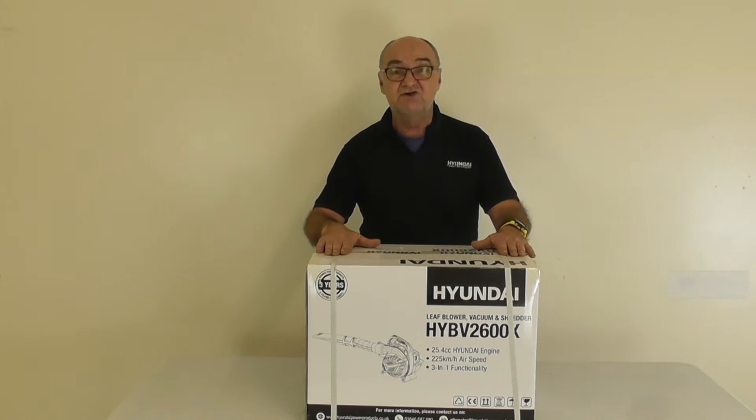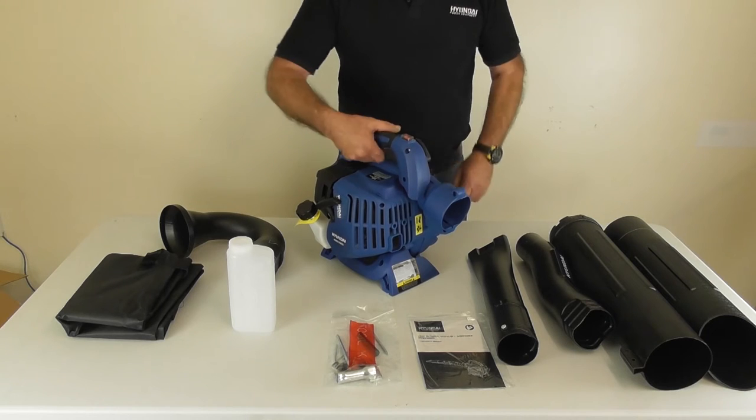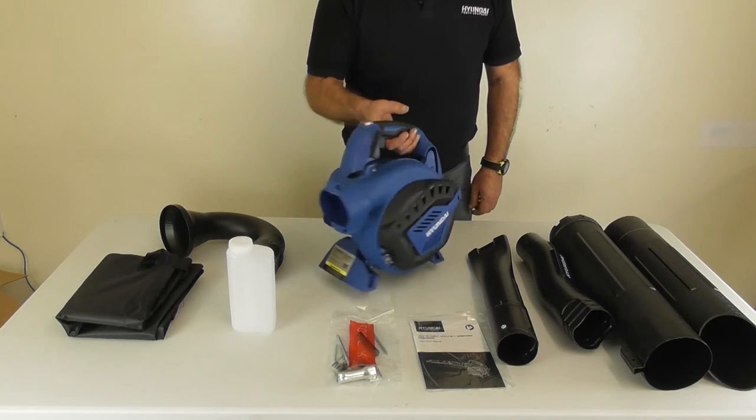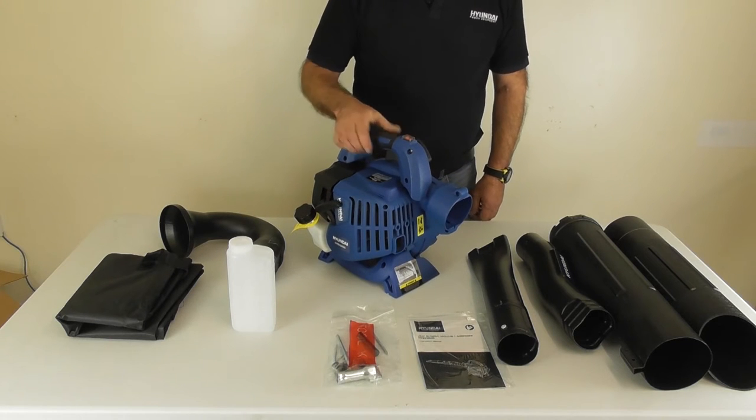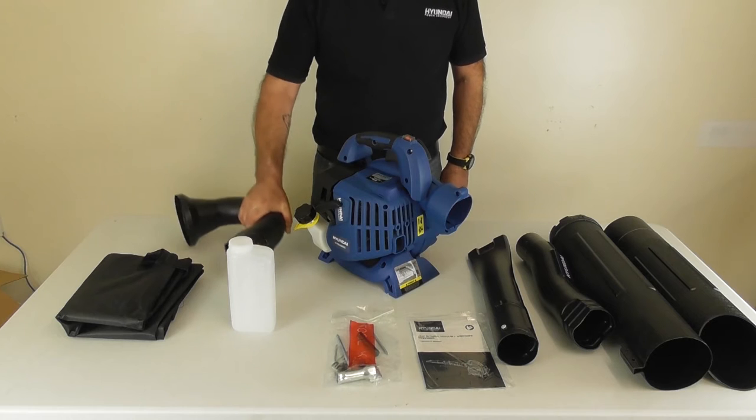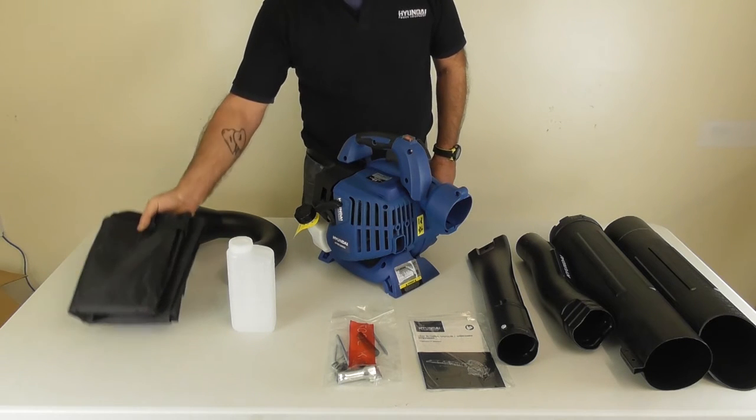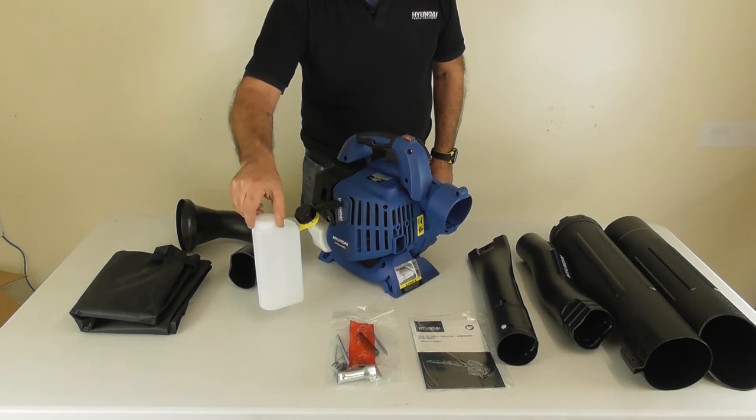I can open up the packaging and lay the contents out on the table for you to see. As you can see here we have the main blower vacuum unit itself with the engine, the inlet tube for leaf collection, and the leaf collecting bag.